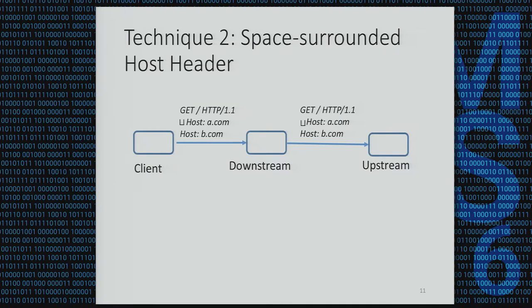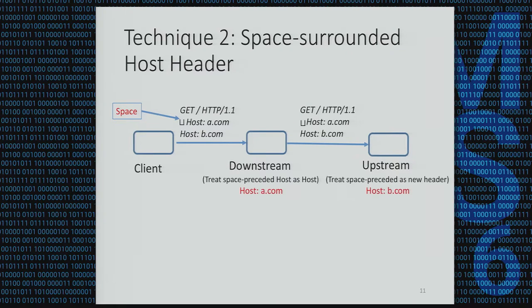The second technique is whitespace around the host header. Whitespace can appear in two forms: space preceding the host name, and space between the host and the colon. Whitespace opens a new opportunity for host ambiguity. For example, assume downstream and upstream both prefer the first host header — there should be no ambiguity. But we can bypass it by adding a space before the host header. Downstream accepts the whitespace-preceded host and takes the request as a.com, but upstream does not recognize the whitespace-preceded host and accepts b.com as the first valid host. Inconsistency happens again.